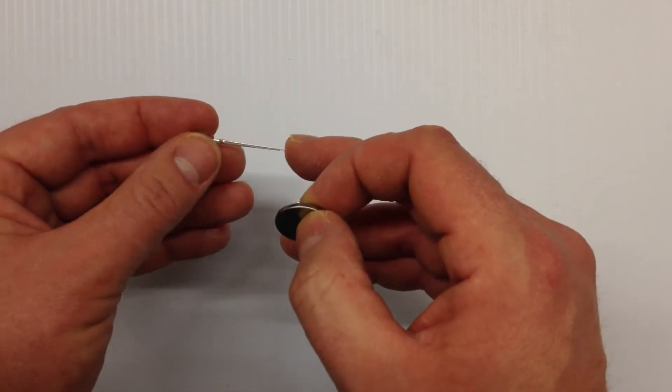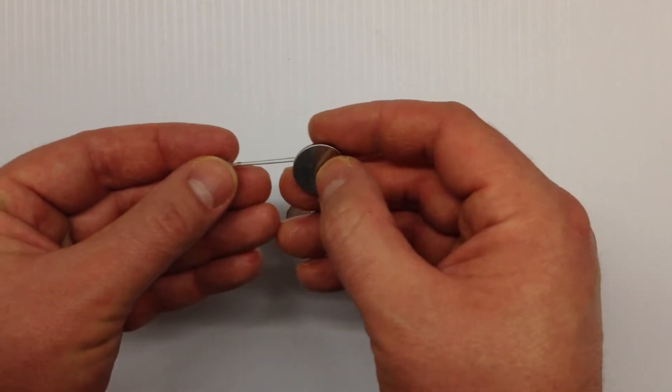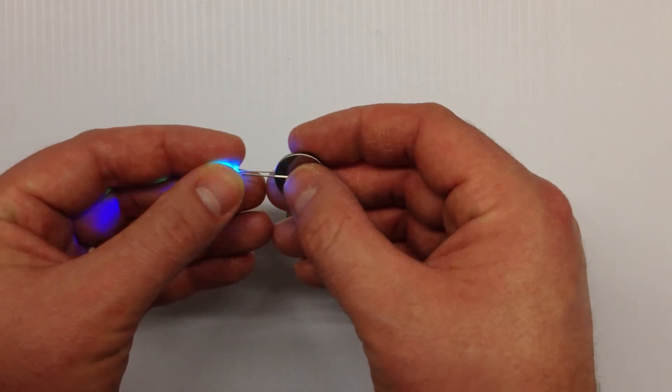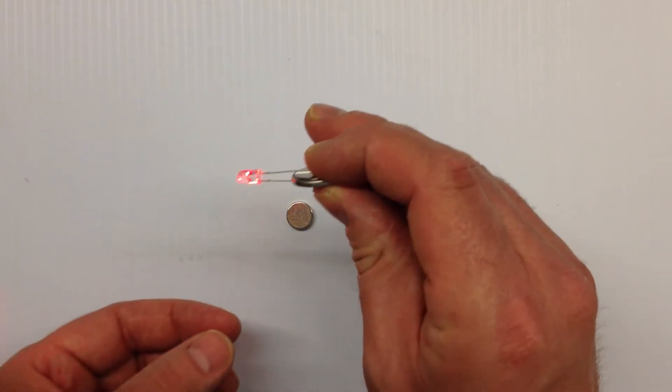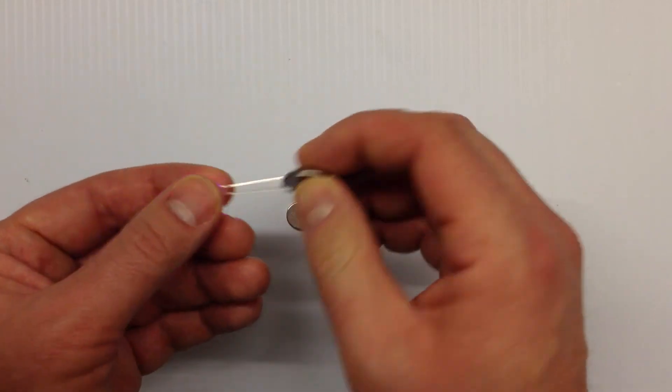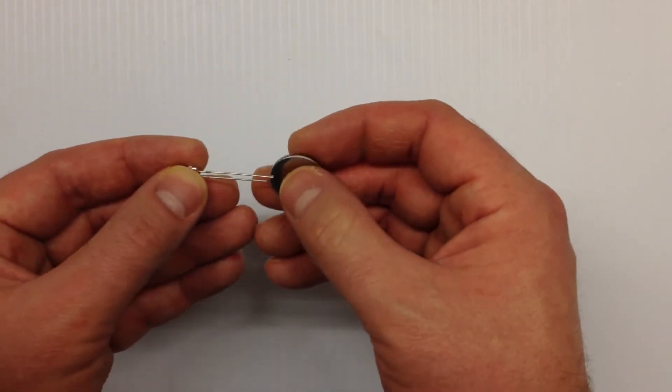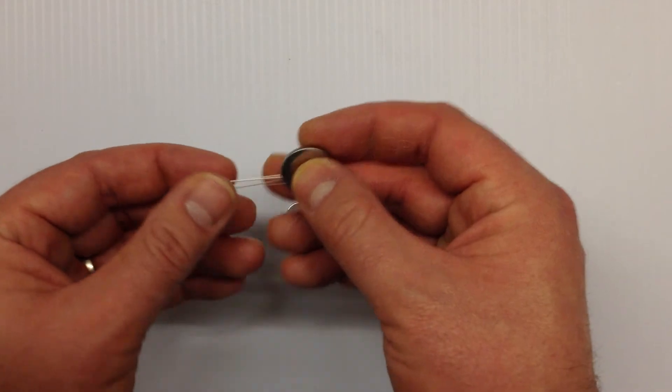Basically, the long end of the LED goes to the positive and the short end goes on the negative. If you get it wrong, it doesn't matter - it doesn't short it out or ruin it, it just doesn't light up.